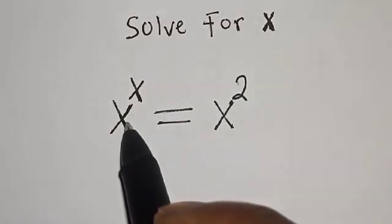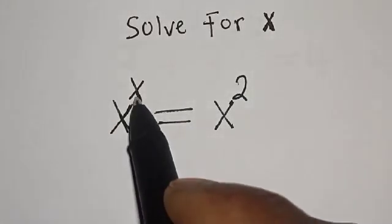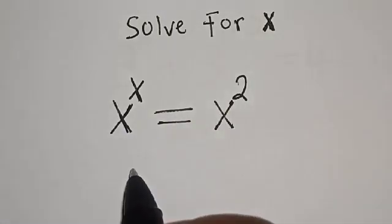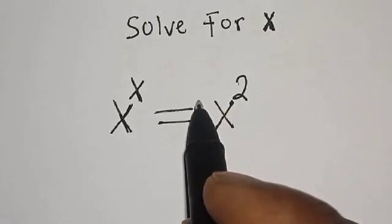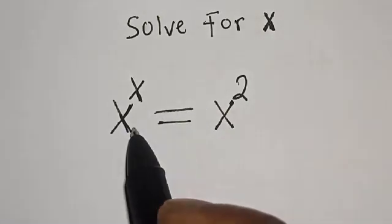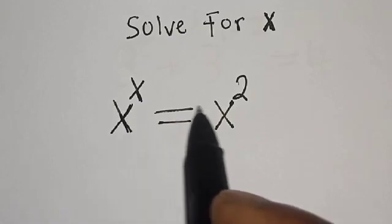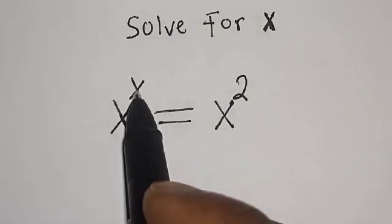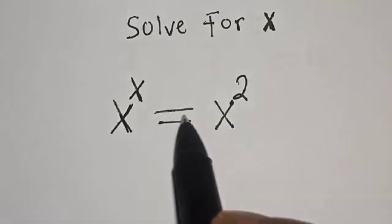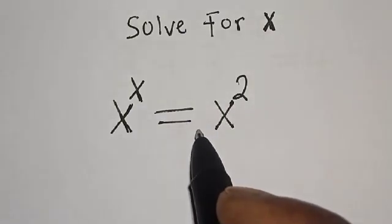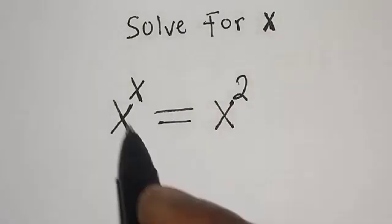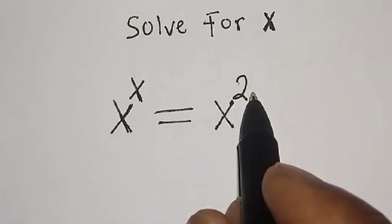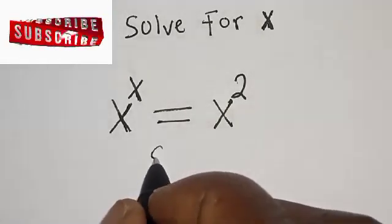Solve for x: s raised to power s is equal to s squared. Hi everyone, welcome to my class. In this class we want to look at how we can quickly find the value of s from this given exponential equation: s raised to power s is equal to s squared. But before we proceed, please don't forget to like, share, comment and subscribe. Thank you.